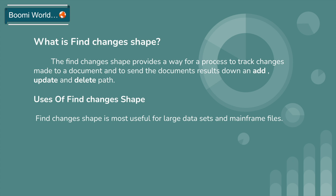Based on your requirement, suppose if you want to process only new data, you can add your remaining execution shapes on the add path. This is how Find Changer Shape will help you to track the changes on the document coming from the source system.